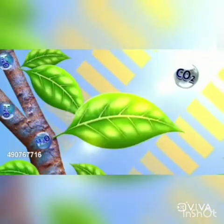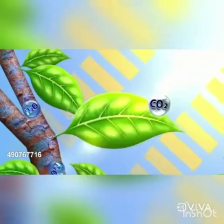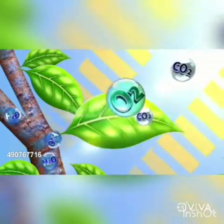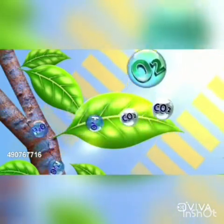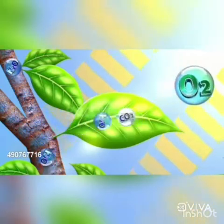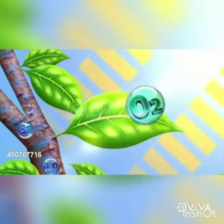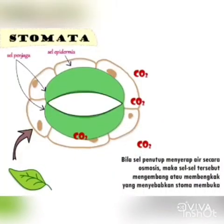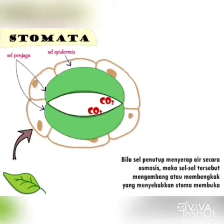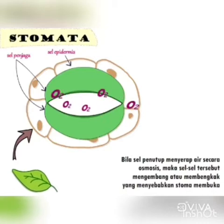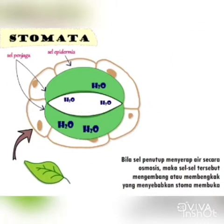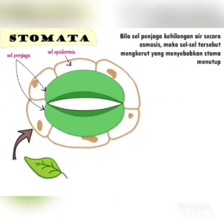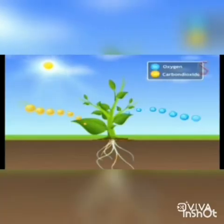The oxygen produced during photosynthesis is more than that required by the plants for respiration. During photosynthesis, itna zyada oxygen produced hota hai at the daytime ki plants ko respiration ke liye atmosphere se oxygen lene ki zarurat nahi padta hai.